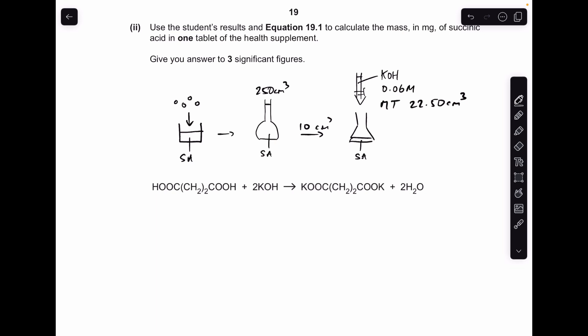So the first thing I'm going to do is work out the moles of KOH used in that mean titre. So that's just concentration times volume in decimeters cubed, 1.35 times 10 to the minus 3. And then we're going to use the mole ratio in the equation to get the moles of succinic acid in the 10 cm cubed. So obviously it's a 2 to 1 ratio, so we're going to half this number here to get the moles of acid.